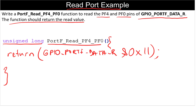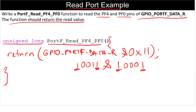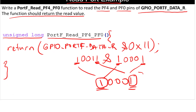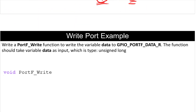For example, if my data register is 0b10011 and I AND this with 0b10001 — where PF4 is bit 4 and PF0 is bit 0 — then 1 AND 1 is 1, and I get back bit positions zero and four. So I will be reading 1 and 1 from bit positions zero and four. Now let's look at a simple example to write a port.